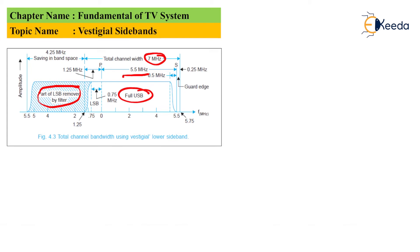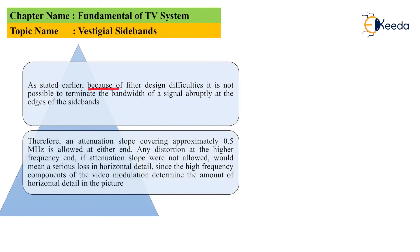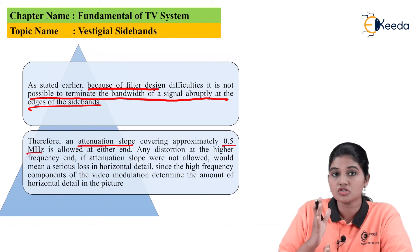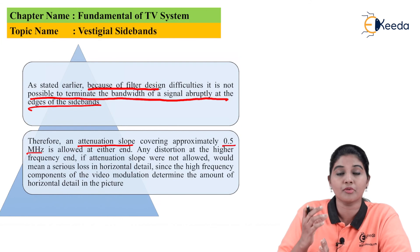Out of the total channel width of 7 megahertz, 5.5 megahertz is the full upper sideband including the 0.5 megahertz attenuation slope, and the LSB has a width of 1.25 megahertz, with frequencies up to 0.75 megahertz radiated by the antenna. Because of the difficult filter design, it is not possible to terminate the bandwidth of the signal suddenly at the edges of the sideband, which is why the attenuation slope concept is used — having an approximate value of 0.5 megahertz. If the attenuation slope were not present, it could result in loss of horizontal details, since high frequency components of the video modulation determine the amount of horizontal detail in the picture.